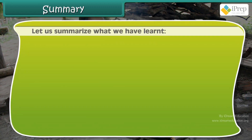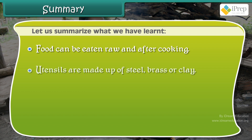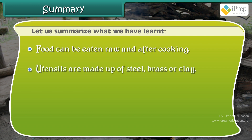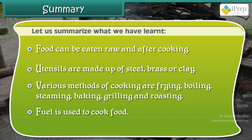Let us summarize what we have learned. Food can be eaten raw and after cooking. Utensils are made up of steel, brass, or clay. Various methods of cooking are frying, boiling, steaming, baking, grilling, and roasting. Fuel is used to cook food.